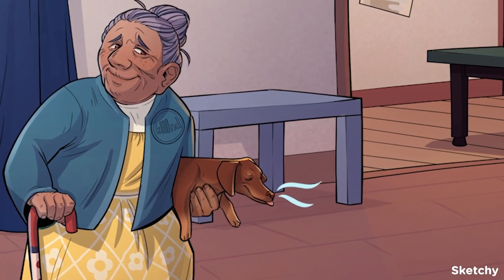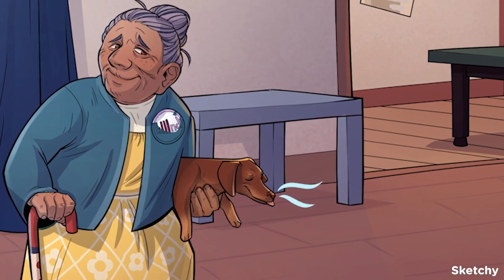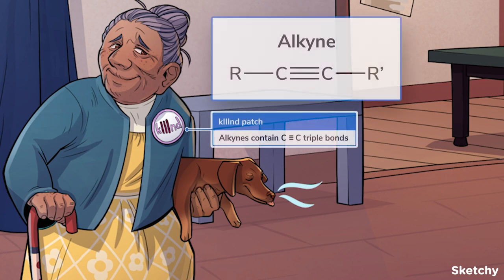Finally, we have alkynes, which have carbon-carbon triple bonds, represented by grandma's kind patch. That's three I's for three bonds. They're named with the "-yne" suffix, Y-N-E, and as "-ynyl", Y-N-Y-L, if they're a side chain.